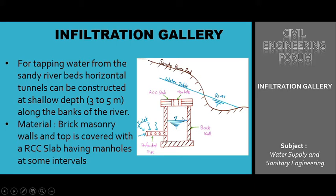Infiltration gallery ka cross section bilkul infiltration well ki tarah hai jahan pe linearly with the horizontal tunnel, regular distance pe manhole place kiya jata hai, iska work execute karne ke liye. Ye wall holes jo reheti hai woh masonry construction ki hai aur yahan pe ek RCC slab place kiya jata hai. Aur aap jo ye figure dekh pa rahe hain woh ek horizontal tunnel ka cross section area hai.